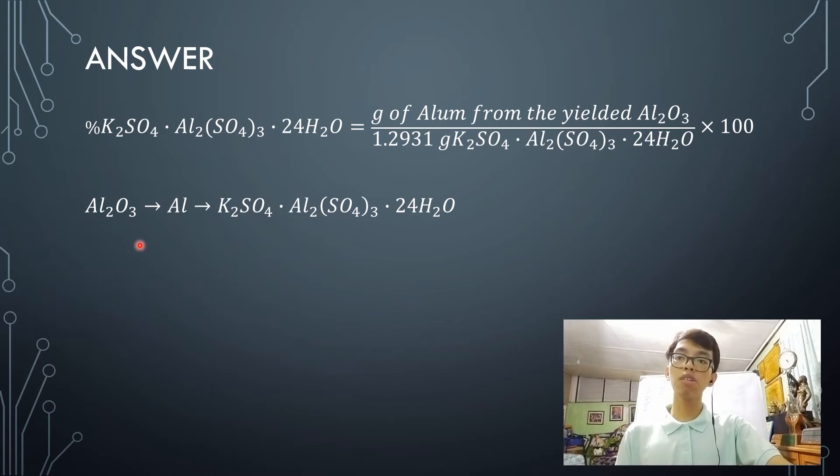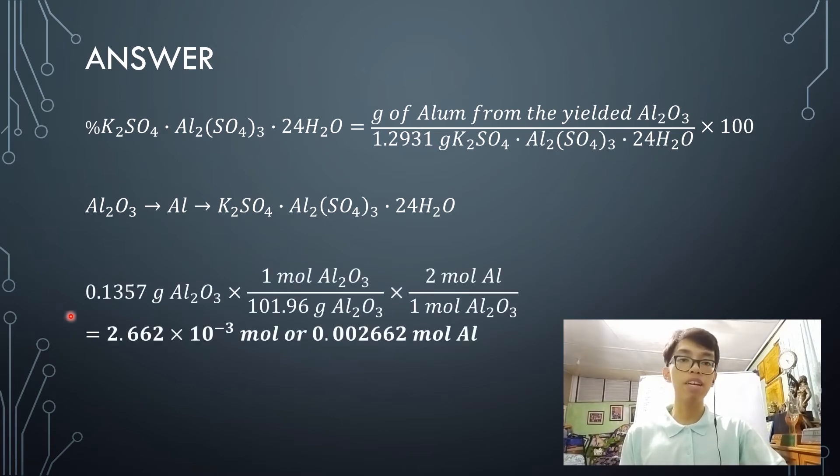So from aluminum oxide, we're going to convert the grams yielded into aluminum. So you have here your 0.1357 grams of aluminum oxide and you multiply that by the molecular weight to cancel out the gram aluminum oxide. Now, then you multiply that by the stoichiometric coefficient of aluminum and aluminum oxide. Now, there are 2 moles of aluminum per 1 mole of aluminum oxide.